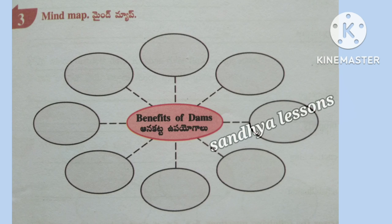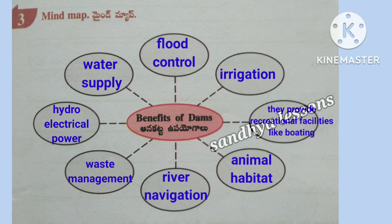Third, mind map. The mind map is about benefits of dams. Benefits of dams are: Water supply, flood control, irrigation. They provide recreational facilities like boating, animal habitat, river navigation, waste management, and hydro electrical power.